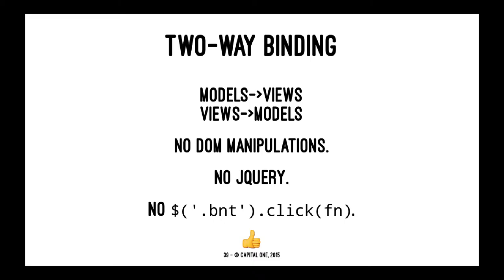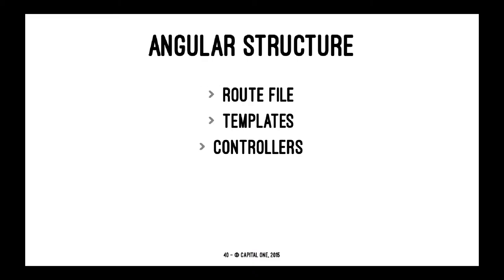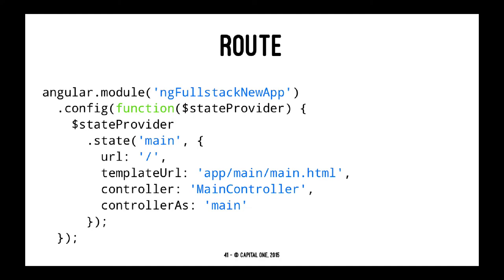So no more dollar sign button dot click. In a typical structure you would have a route file, and in that route file you would specify the template name and the controller name. The template would use special Angular things called ng-directives or Angular directives. The controller would have your Ajax or XHR calls to the server. In the router you have a module name, a URL that appears in the browser — for the slash it's just the homepage — a templateUrl property which is the name of the file, and the controller is the name of the controller.